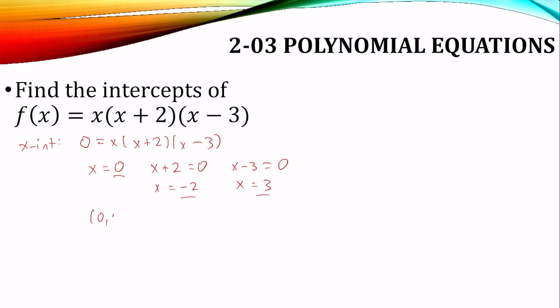It has points that would be (0, 0), (-2, 0), and (3, 0). The y-intercept, you let x = 0. So let x = 0, and you get y is 0. So the y-intercept would be (0, 0).